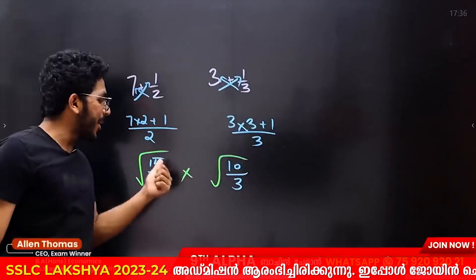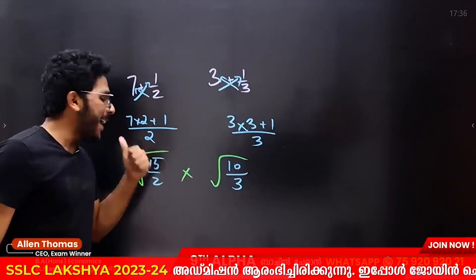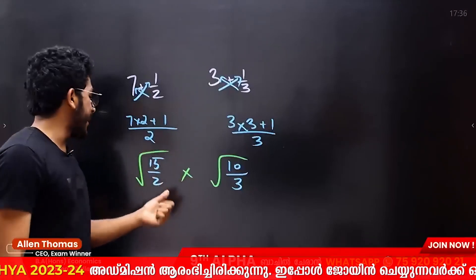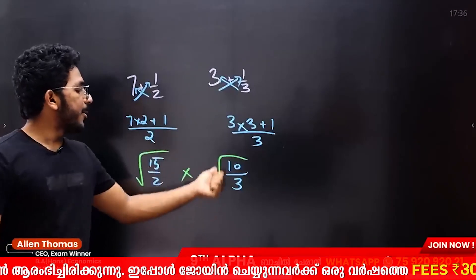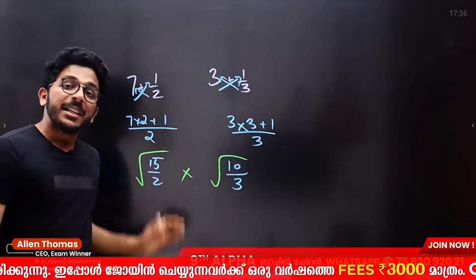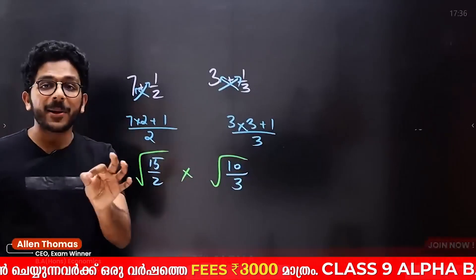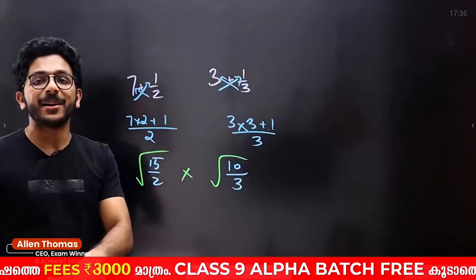Bye bye everyone! Join us if you are ready. We will answer them in the comments. Root 15 by 2, root 10 by 3 — multiply this one. The answer is a natural number.